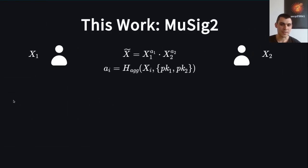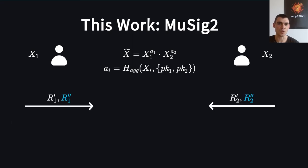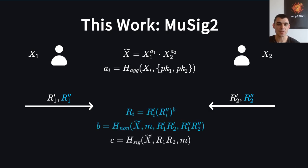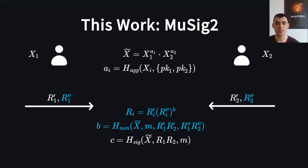We finally look at the scheme developed in this work: MuSig2. It differs from the early flawed variant of MuSig1 by letting each signer generate and send 2 nonces instead of 1 — this is the variant secure in the AGM. Each signer's effective nonce r_i is a random linear combination of its 2 nonces with random exponent b. This exponent is the hash of the aggregate public key, the message, the product of all signers' first nonces, and the product of all signers' second nonces. Each signer then creates a partial signature using their effective nonce.